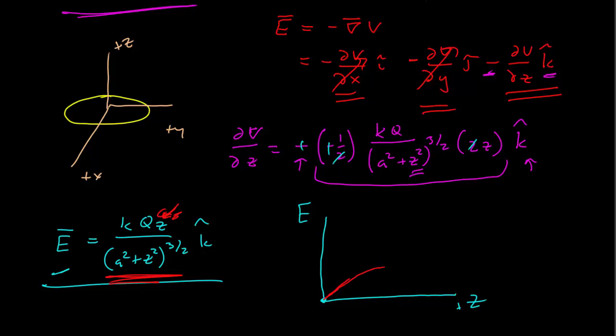And so right at the center here, the field is zero. And we can see that because all of the components are pointing opposite, so they all cancel.